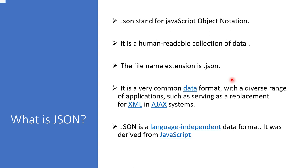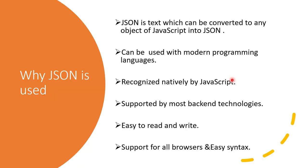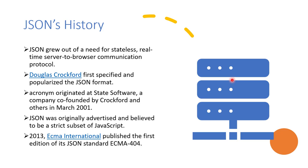JSON is also language independent — there is no such data format which is restricted — and it was derived from JavaScript. JSON is a text which can be converted to any JavaScript object and into JSON. It can be used with modern programming languages, it is recognized natively by JavaScript, it is supported by most backend technologies, it is easy to read, write, and use, and it supports all browsers and has a very easy syntax.